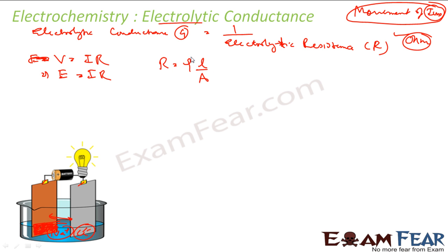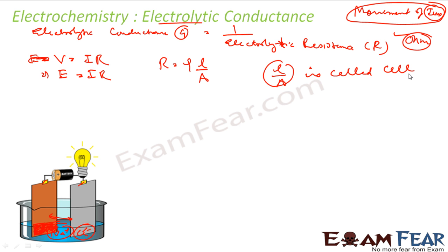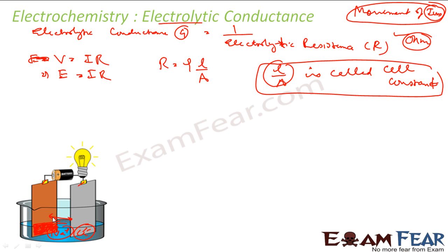For any given cell, l/A will be constant because the length between the two electrodes is fixed and the area is fixed for a fixed volume of solution. This constant value l/A for a cell is called the cell constant, because length and area are constant for a given cell.